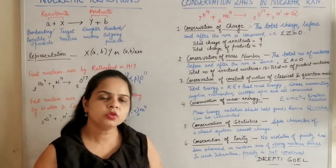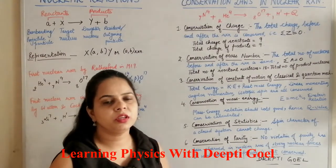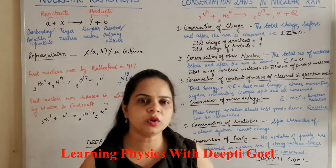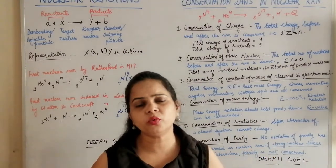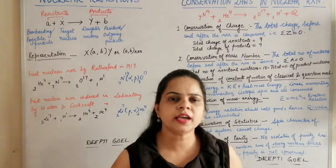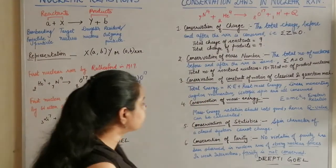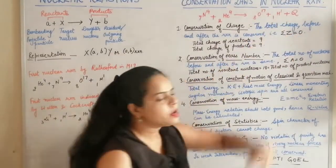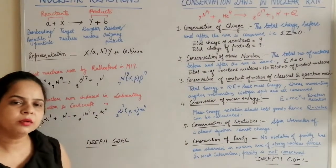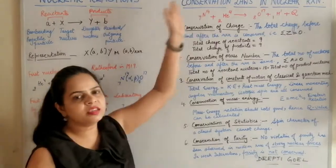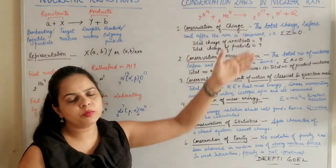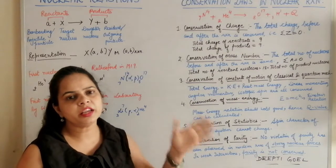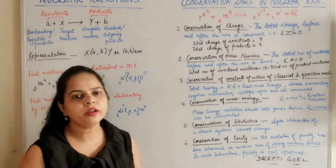The fourth type is conservation of mass-energy. Mass and energy are related by Einstein's mass-energy relation E=mc². Mass can be converted to energy and energy can be converted to mass. The Q value of the reaction is calculated using this relationship — the net increase or decrease in mass determines the Q value and whether the reaction is endothermic or exothermic.